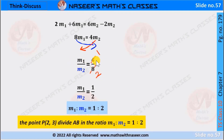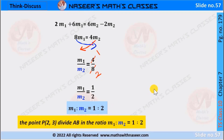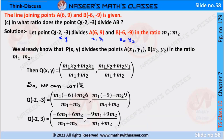2M1 + 6M1 is written as 8M1, and 6M2 − 2M2 is written as 4M2. Now we transpose M2 to the denominator of LHS and 8 to the denominator of RHS. Then we can write M1/M2 = 4/8. Cancelling, we get 1/2. Therefore M1:M2 = 1:2. The point P(2,3) divides AB in the ratio M1:M2 = 1:2.